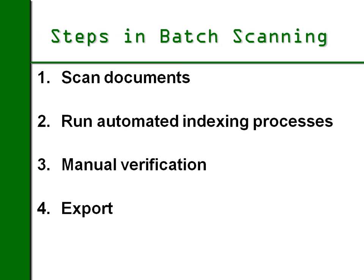The steps involved in a batch scanning process are: first, you scan the documents. Next, you run automated processes like barcode recognition, OCR, and other processes like deskew and despeckle, which we'll cover on the next slide. These automated processes have to run because step three is verification — manual verification of those automated processes. If you're reading index values with OCR, you need to verify that the correct results were obtained. In step three you also review the images to make sure they are all legible. And at the end of manual verification, you export the images and save them in the organized file format that you want.